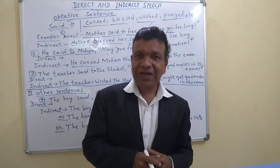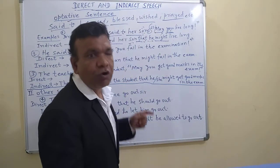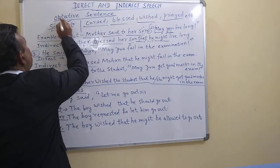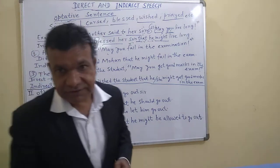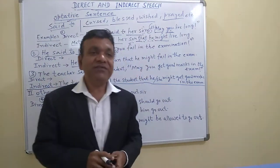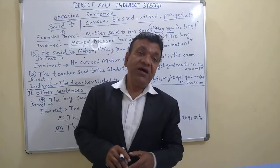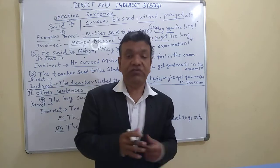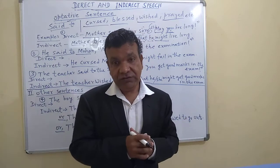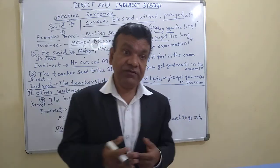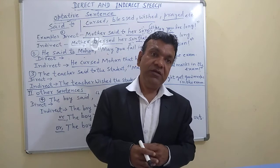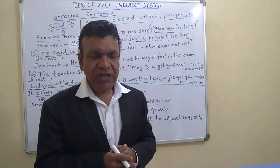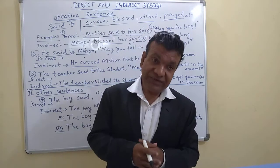Now, my dear children, I am going to explain one more sentence type — that is called the optative sentence. Firstly, you should know what an optative sentence is. Optative sentences are sentences used to express our wishes or desires, or sometimes blessings or curses. Those sentences are called optative sentences.